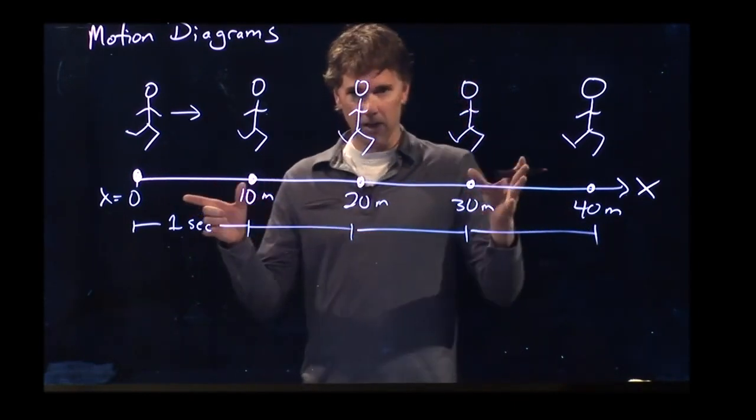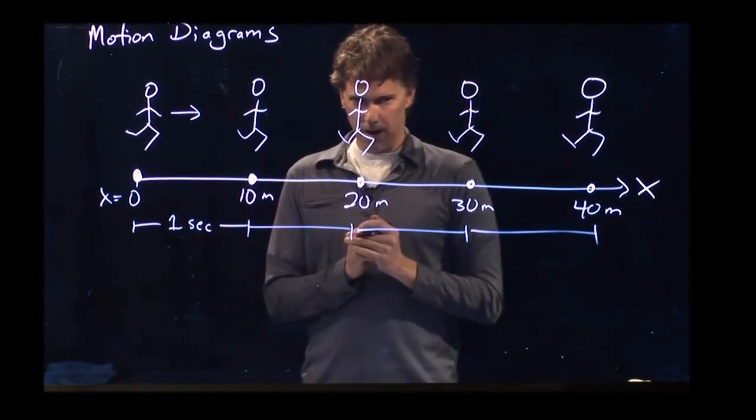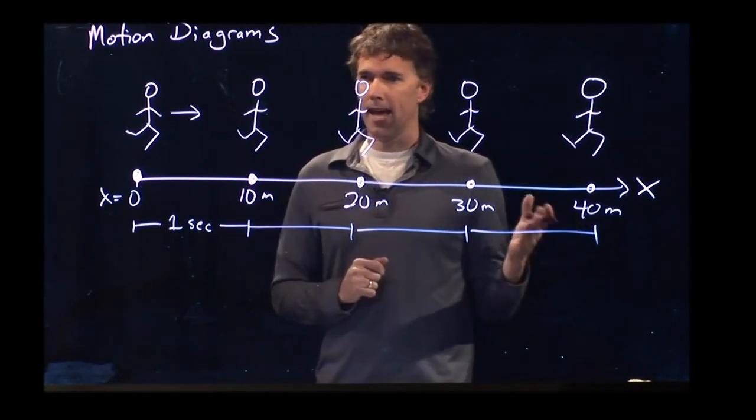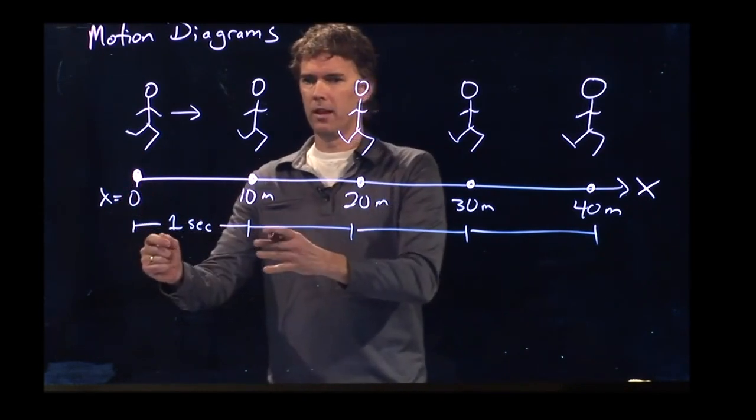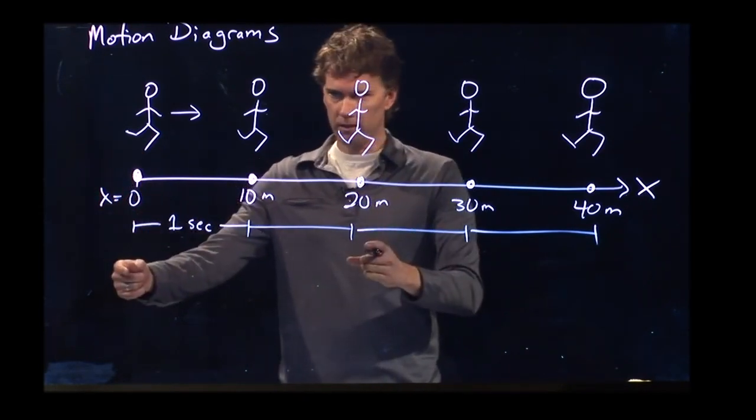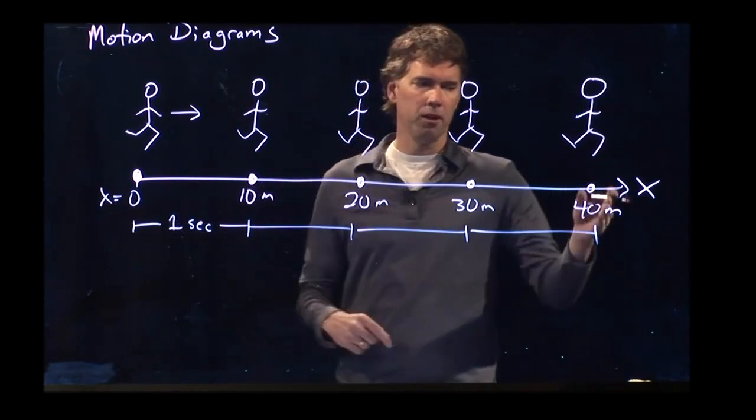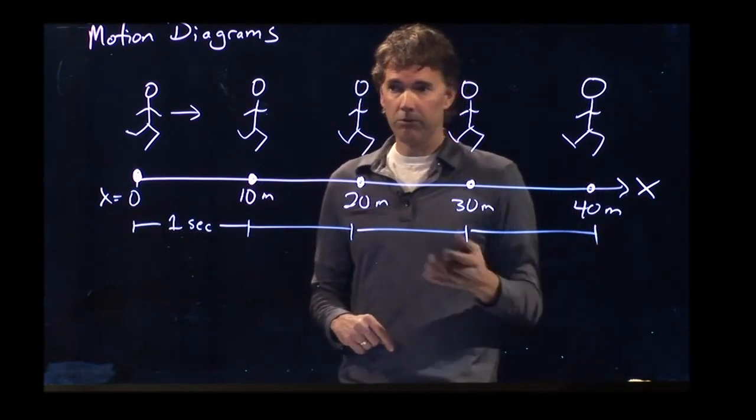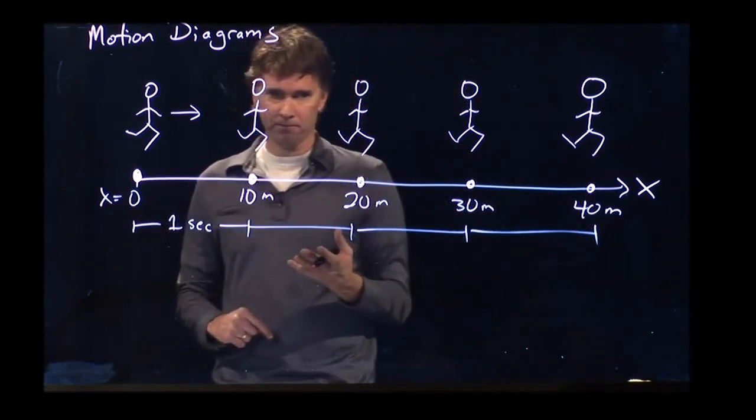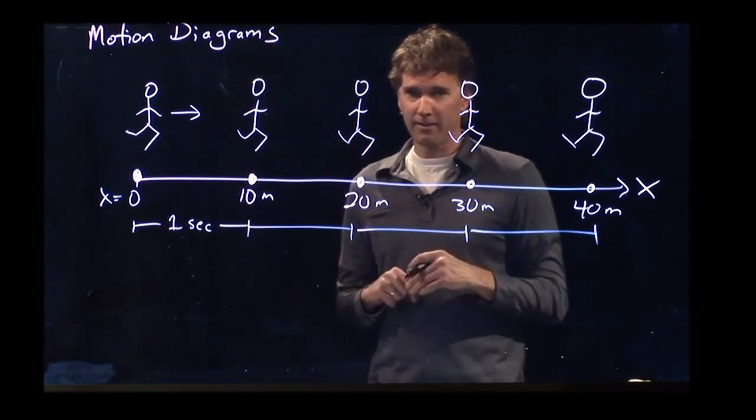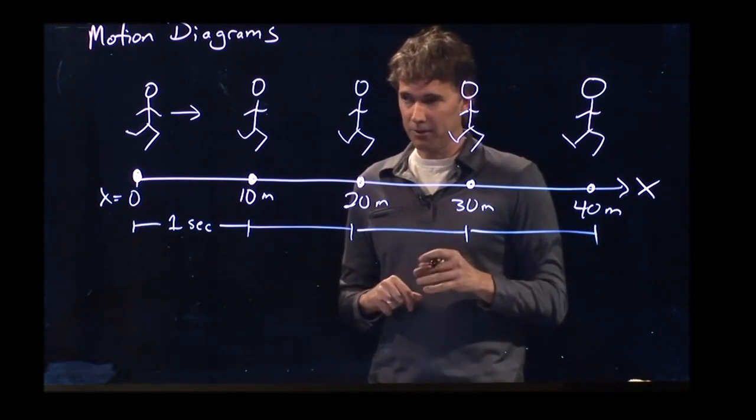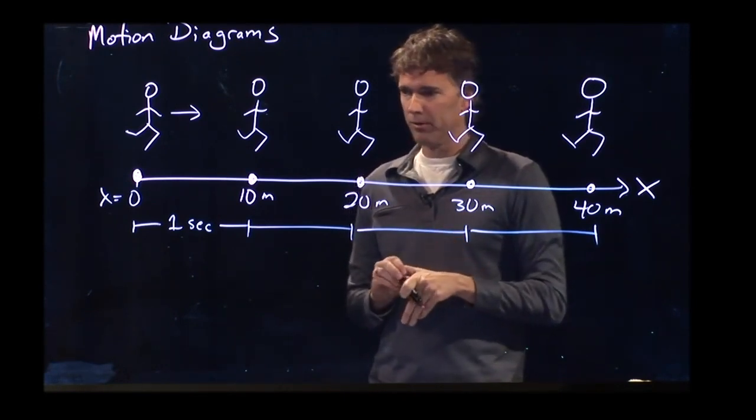All right. So now based on these numbers, you would probably say the person is running at constant speed. They are going 10 meters in the first second, 20 meters in 2 seconds, 30 meters in 3 and 40 meters in 4, which is running at 10 meters per second. I know for a fact that at my advanced age I cannot do that. But 10 meters per second, that's moving.